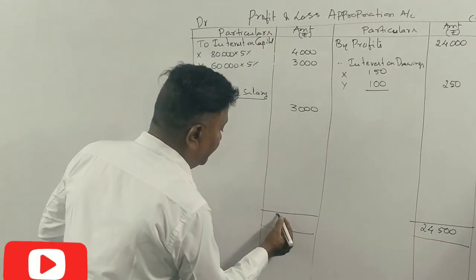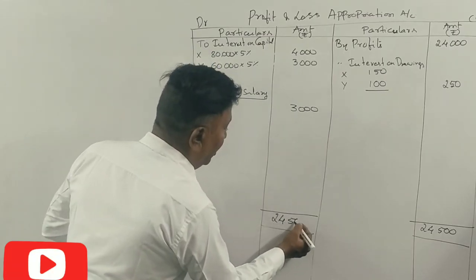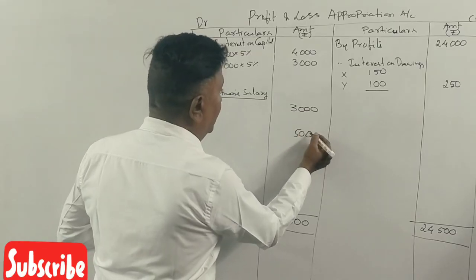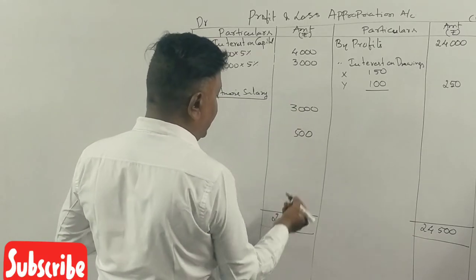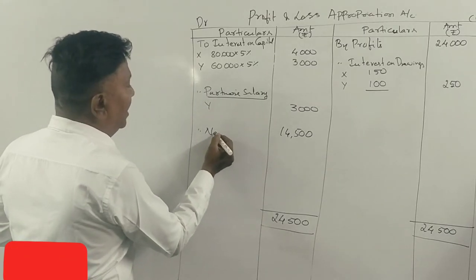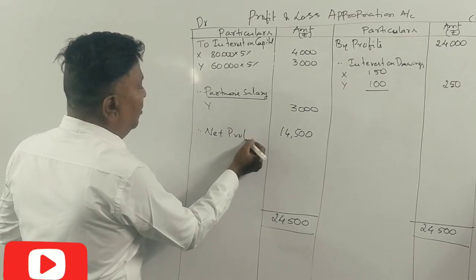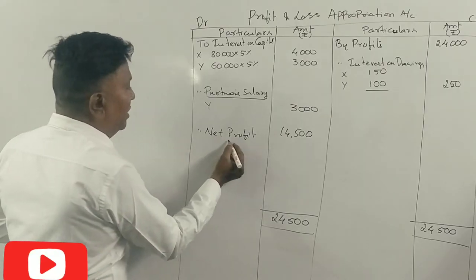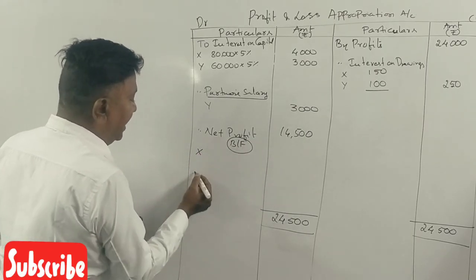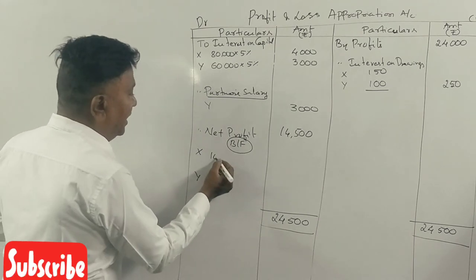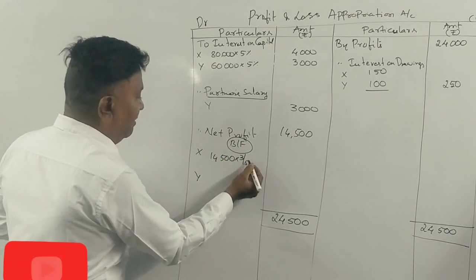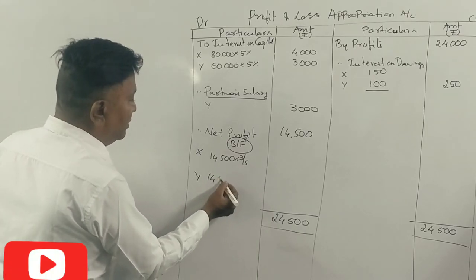The debit side total is 24,500. 7 plus 3 is 10, giving 14,500. Net profit after adjustment — balancing figure for X and Y: 14,500 into 3 by 5, and 14,500 into 2 by 5.